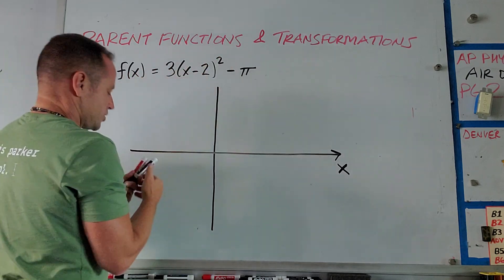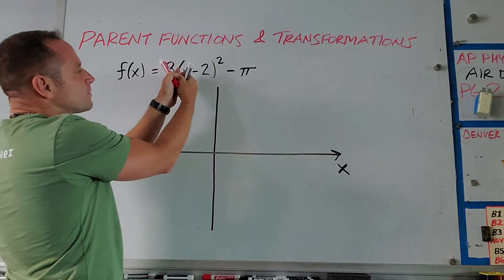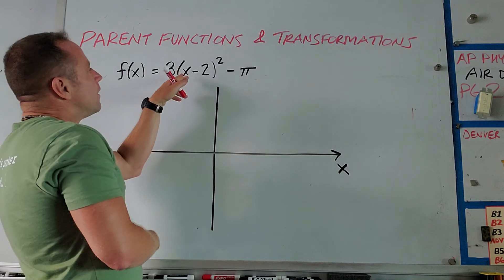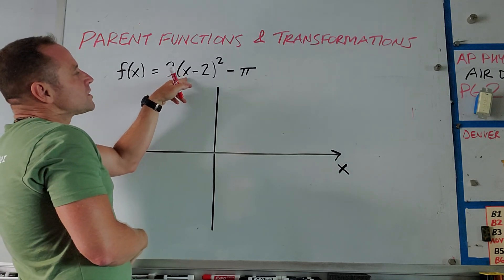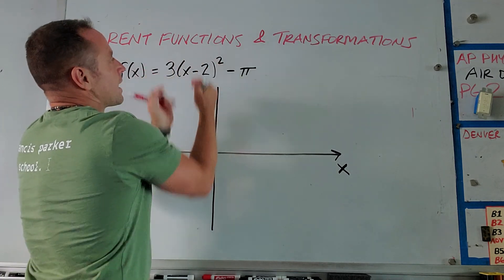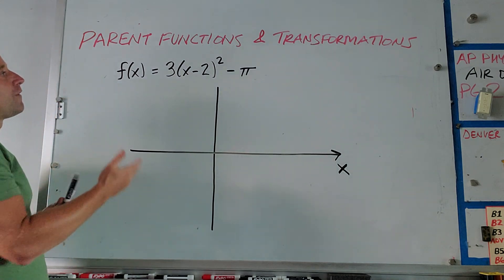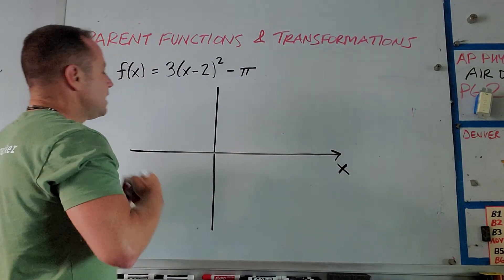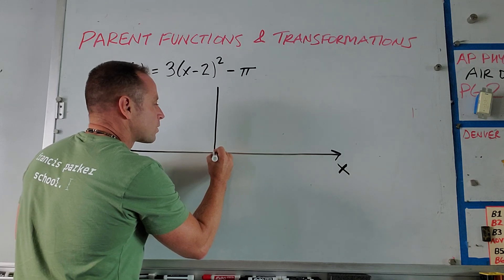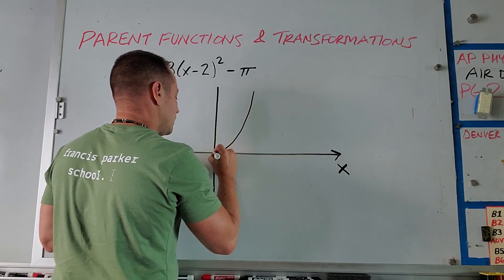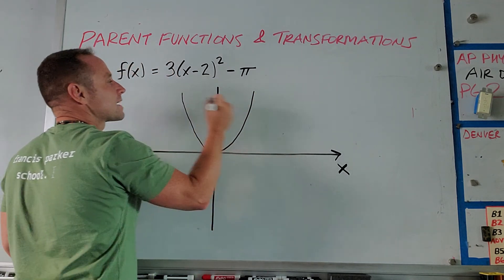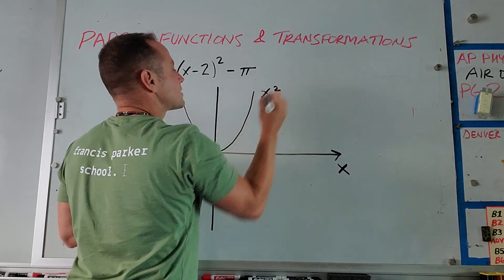And so if you look at this expression, kind of starting from sort of inside out, notice this variable or this expression with x is getting squared. So what's called the parent function is just x squared. And you know that that's just the most basic parabola. So here is a parabola of like y equals x squared. So here I'm graphing x squared.